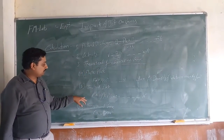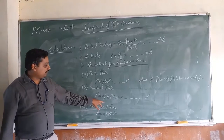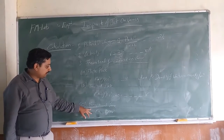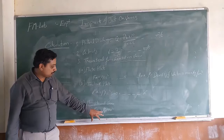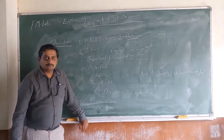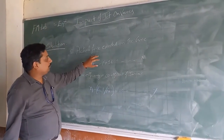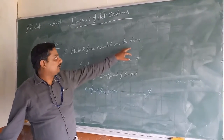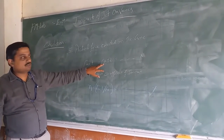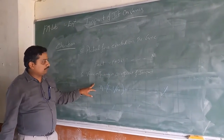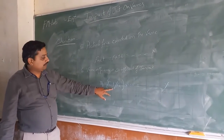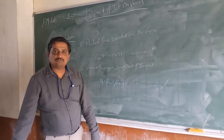For the inclined vane the formula is F_theoretical = ρAV² × sin θ, where θ is 15 degrees. For the hemispherical vane, F_theoretical = 2ρAV², where θ equals 0. The actual force is calculated as F_actual = F × 9.81, where F is read from the force measuring instrument. Efficiency η = (F_actual / F_theoretical) × 100, expressed as a percentage.